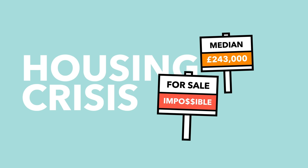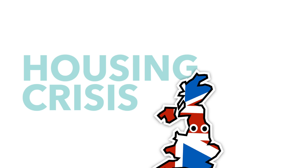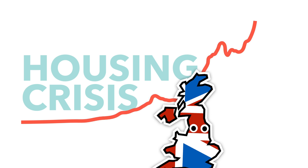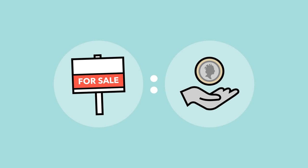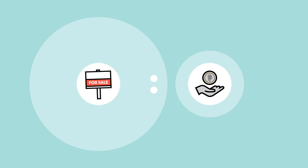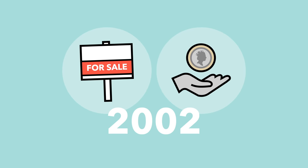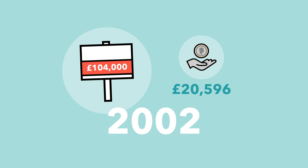So what exactly is the housing crisis? When people talk about the UK's housing crisis, they're usually referring to the increased cost of housing. Historically, the ratio between the median house price and the median income has sat around four, meaning the median house used to cost about four times the median annual salary. In 2002, the median house price in England and Wales was £104,000 and the median salary was £20,596 — about five times as expensive.